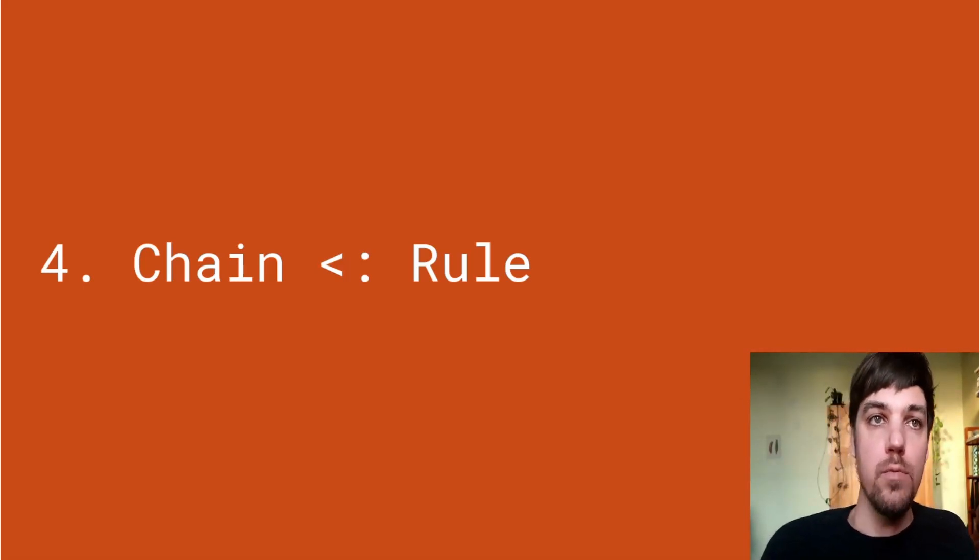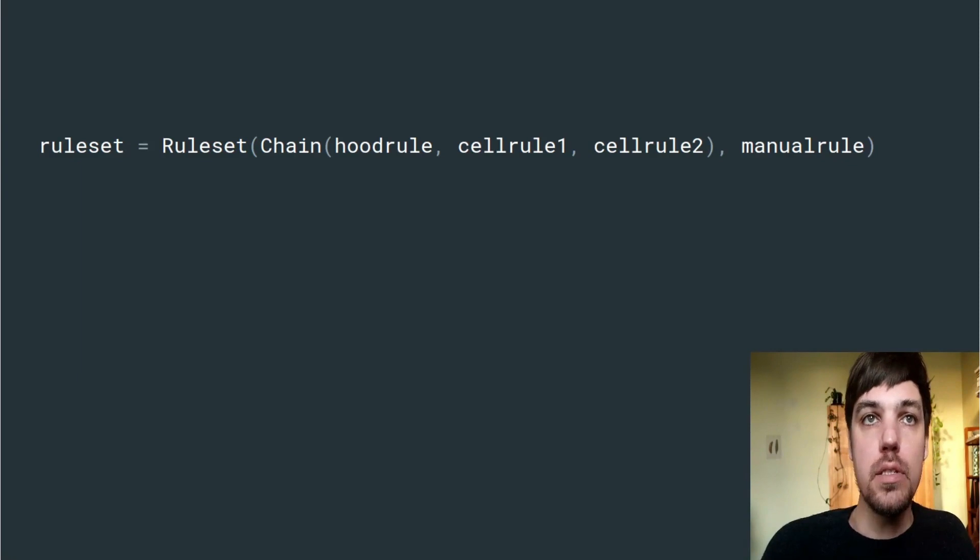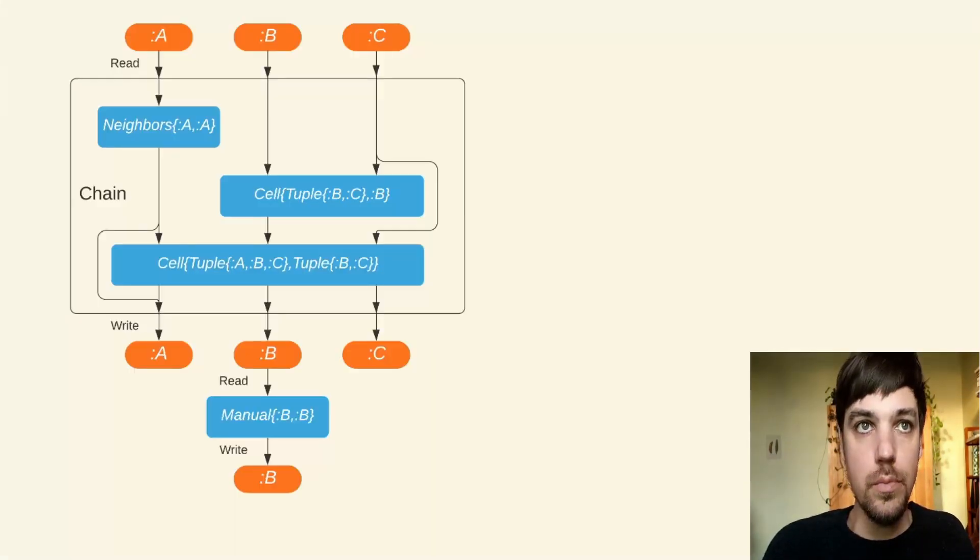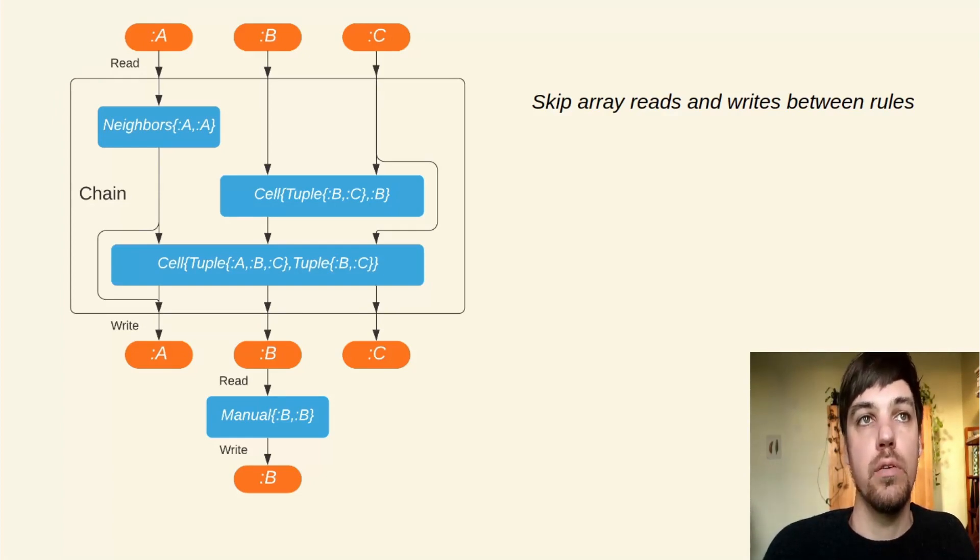The next rule is a chain rule. This is just a rule that can wrap other kinds of rules. It works by skipping array reads and writes between those rules. It also works when we have multiple grids, so we're just rerouting the outputs of one rule to the required inputs of the next rule, working all that out at compile time so it doesn't have much runtime overhead.